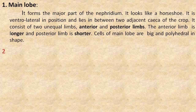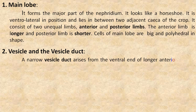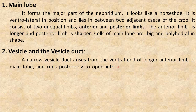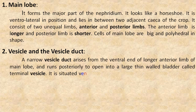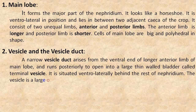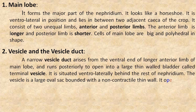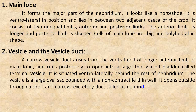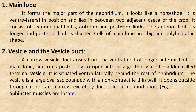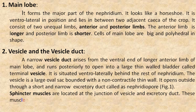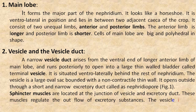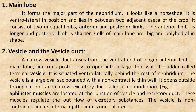The second part is the vesicle and vesicle duct. A narrow vesicle duct arises from the ventral end of the longer anterior limb of the main lobe and runs posteriorly to open into a large thin-walled bladder called the terminal vesicle. It is situated ventrolaterally behind the rest of the nephridium. The vesicle is a large oval sac bounded by a non-contractile thin wall. It opens outside through a short narrow excretory duct called the nephridiopore. The spindle muscles located at the junction of the vesicle and excretory duct regulate the outflow of excretory substances. The vesicle is non-contractile and its internal epithelium is non-ciliated.